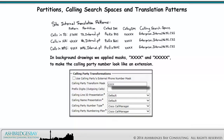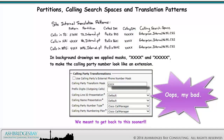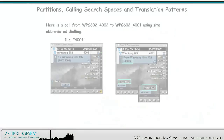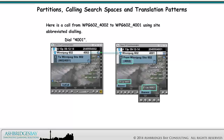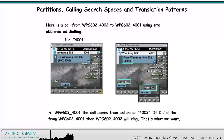In background drawings, we applied masks XXXX and XXXXX to make the calling party number look like an extension. We meant to get back to this sooner. Here is a call from Winnipeg 602 4002 to Winnipeg 602 4001 using site abbreviated dialing. At Winnipeg 602 4001, the call comes from extension 4002. If I dial that from Winnipeg 602 4001, then Winnipeg 602 4002 will ring — that's what we want.